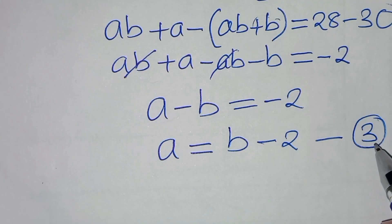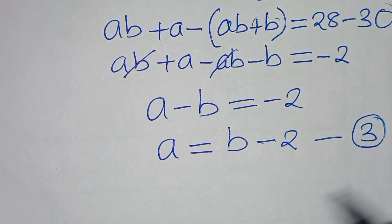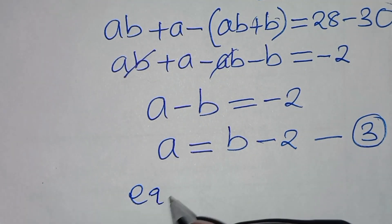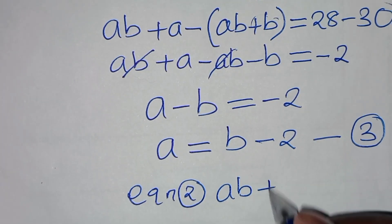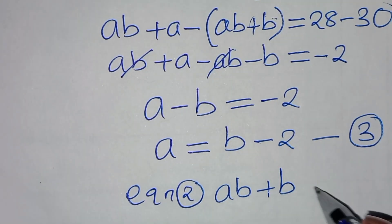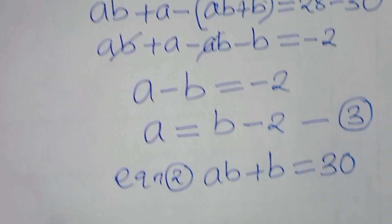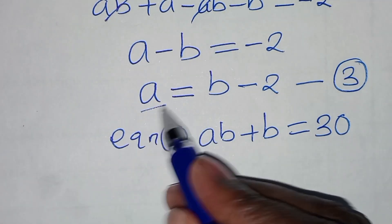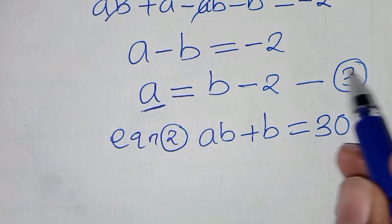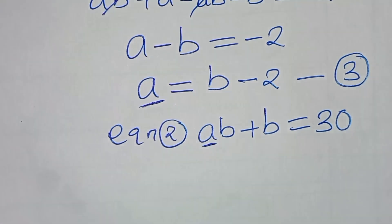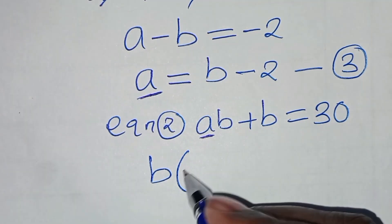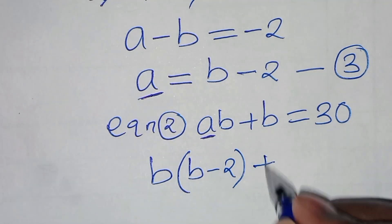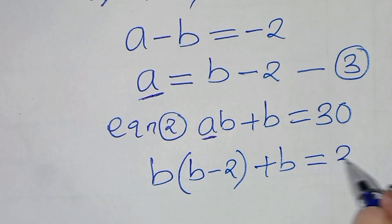Now let's substitute equation 3 into equation 2. From equation 2, we have ab + b = 30. Since we have the value of a from equation 3, let's substitute so that we have b times (b minus 2) plus b = 30.